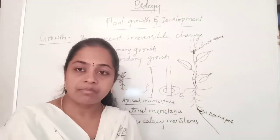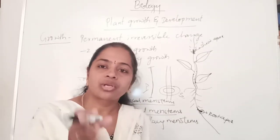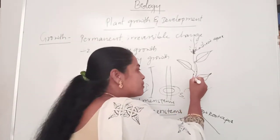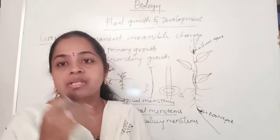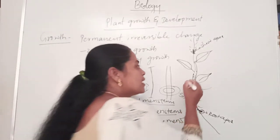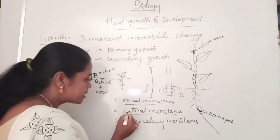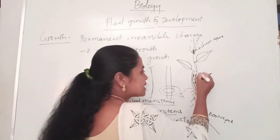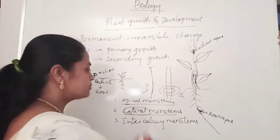There are three types of simple permanent tissues: parenchyma, colenchyma, and sclerenchyma. These cells have lost their cell division capacity. The lateral meristems increase the girth of the stem.